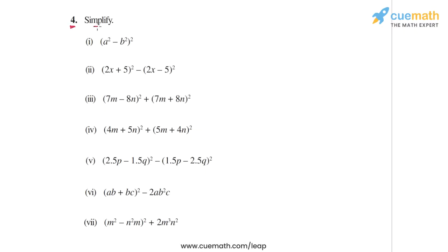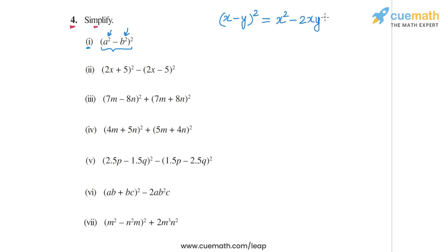In question 4, we have to simplify each of these seven expressions. Let's start with the first part: the expression (a² - b²)². This is of the form (x - y)² where x is a² and y is b². We can expand this as x² - 2xy + y².